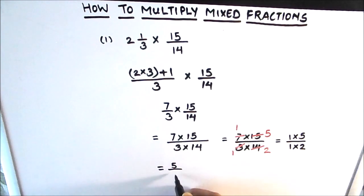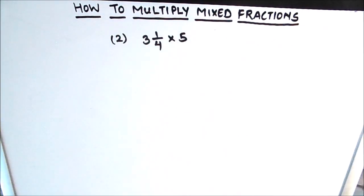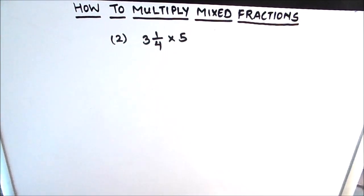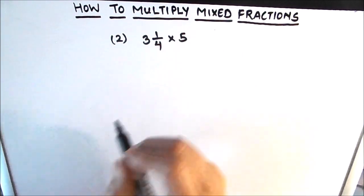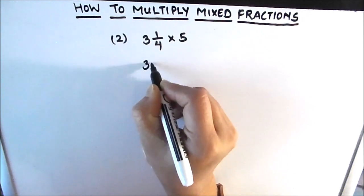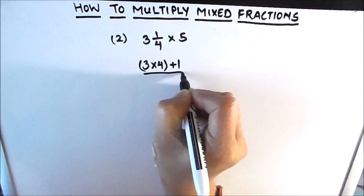So 1 times 5 is 5 and 1 times 2 is 2, giving us 5 upon 2 as our final answer. This is how we multiply and simplify a mixed fraction. In our second example, we have the mixed fraction 3 and 1/4 multiplying with the whole number 5. We start by converting the mixed number into an improper fraction: 3 times 4 plus 1, divided by 4.